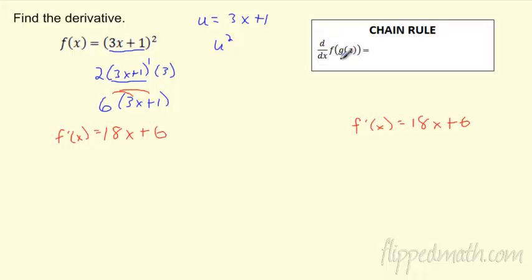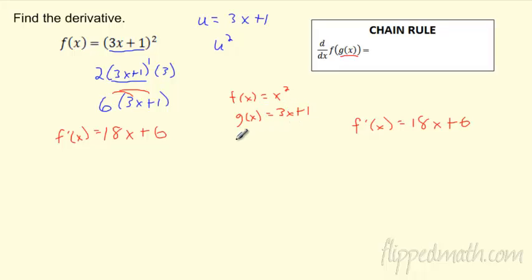So how does the chain rule work? If you have a function inside a function — right now I've got the g(x) inside the f(x) — we could have written it over here too. The f(x) is x², and in this problem the g(x) would have been 3x+1. So f(g(x)) is: take 3x+1, put it in there, and square it. That's what this notation means, so don't freak out.